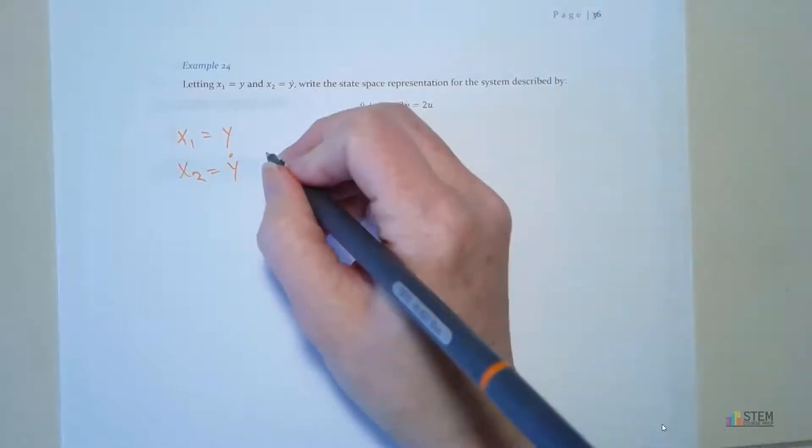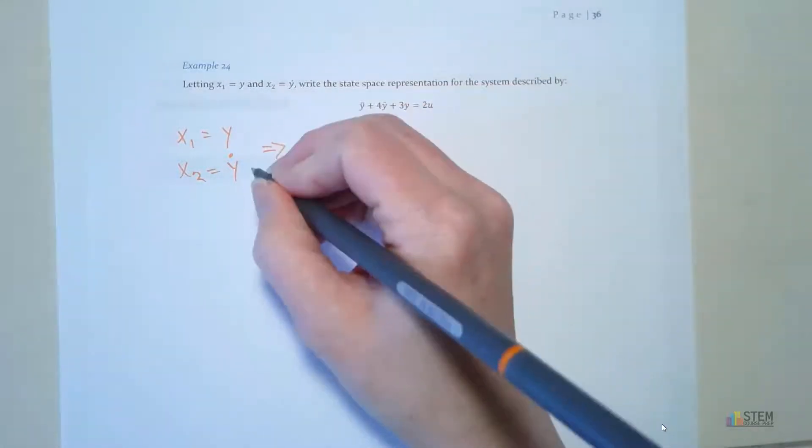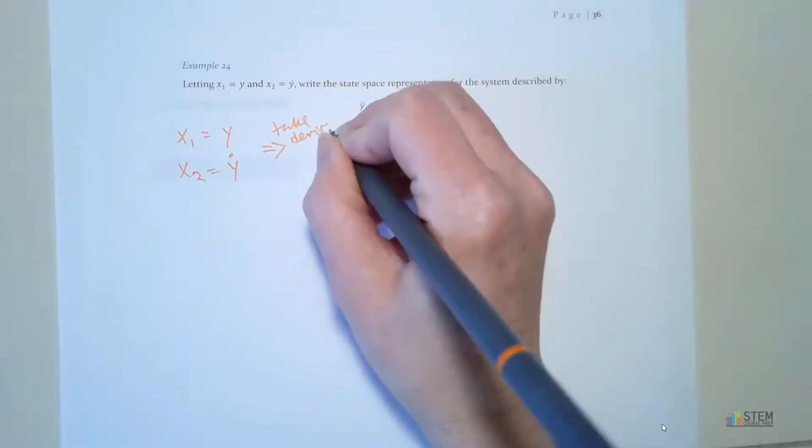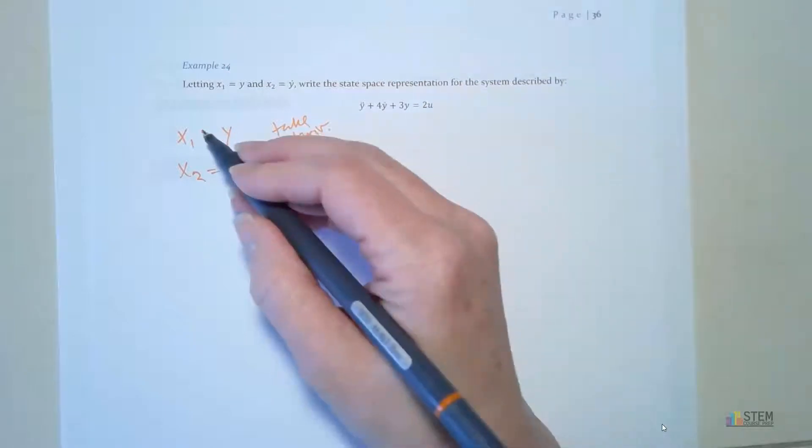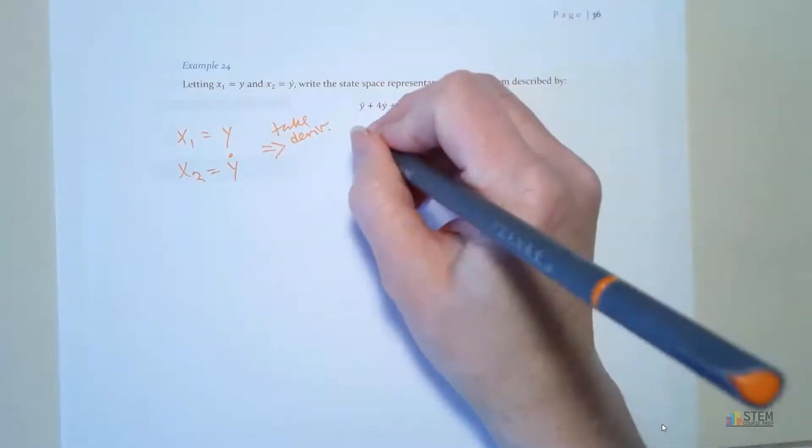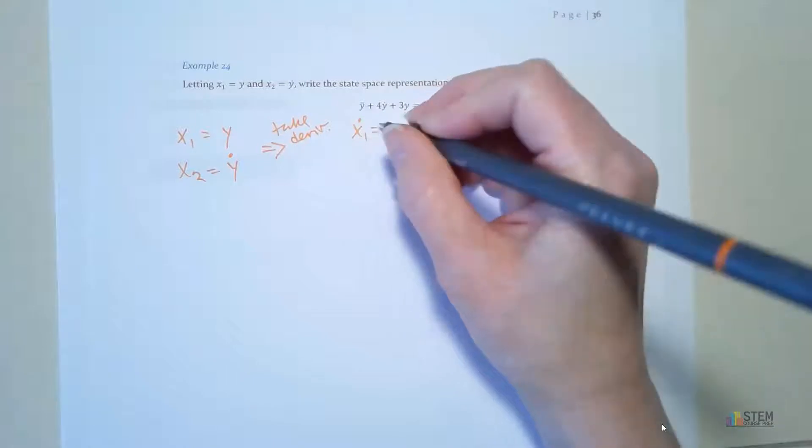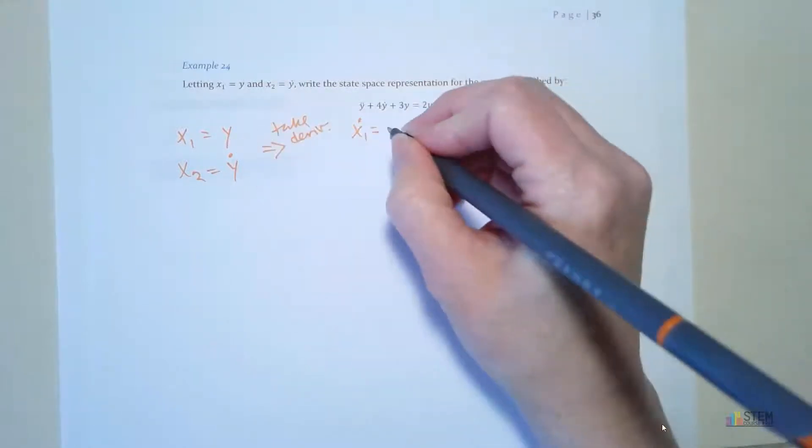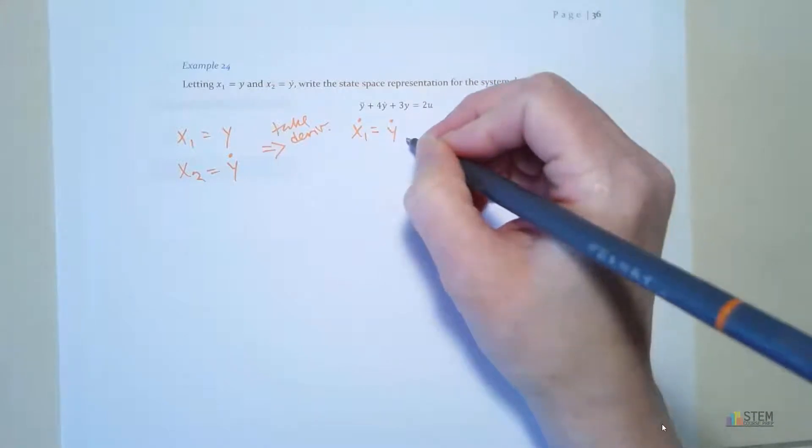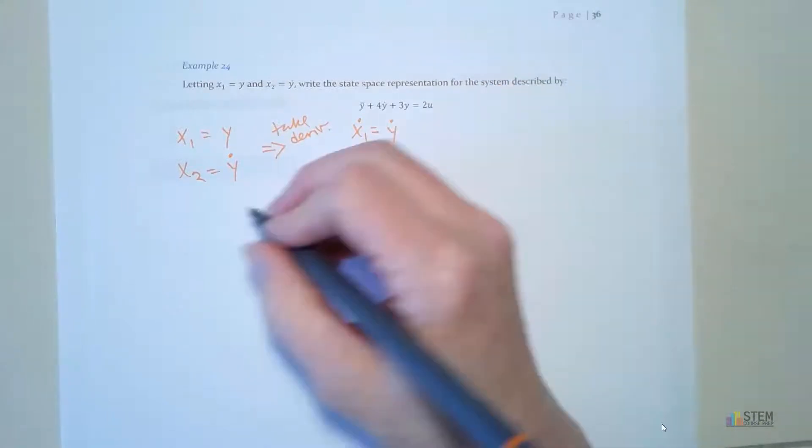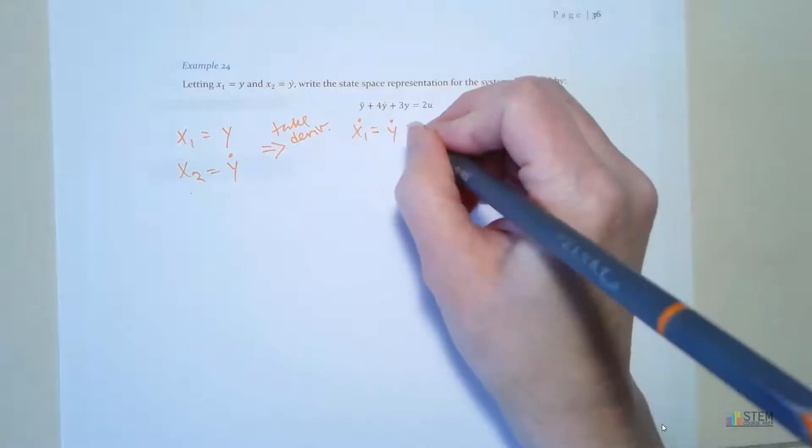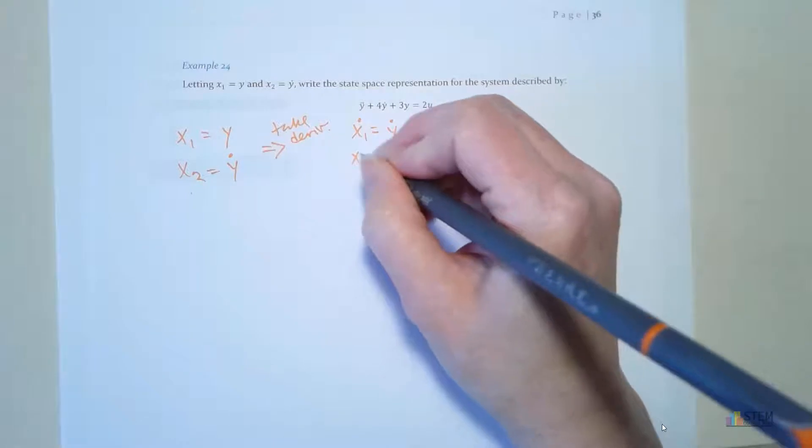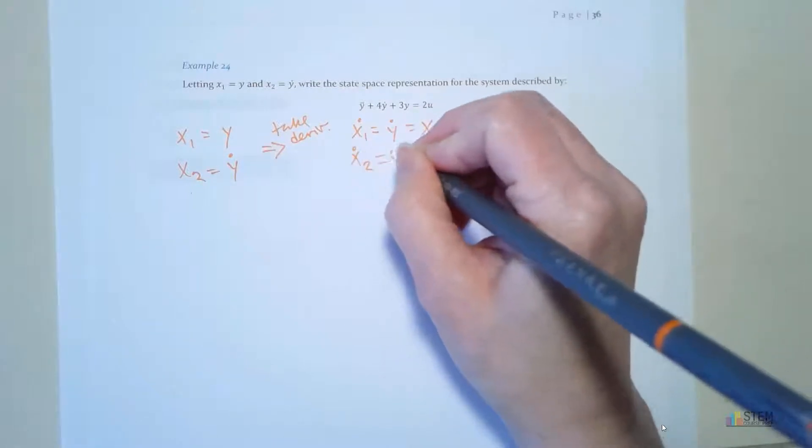Now, what we want to do next is take the derivative. So if we take the derivative, then we're going to take the derivative of both sides of these equations. That means we're going to have x1 dot, which is then going to be y dot. And what variable represents y dot? That would be x2, right? So now we've got x2. We'll do the same thing down here.